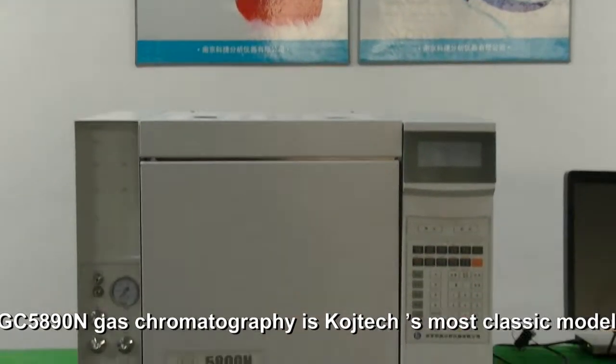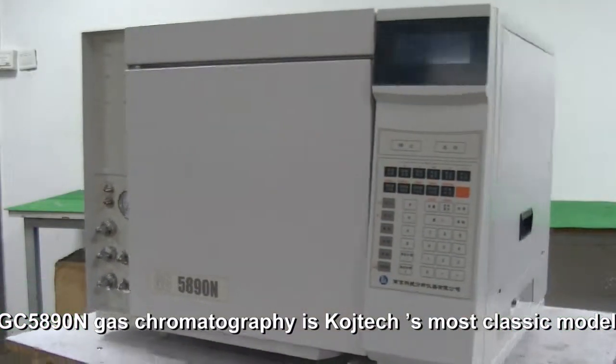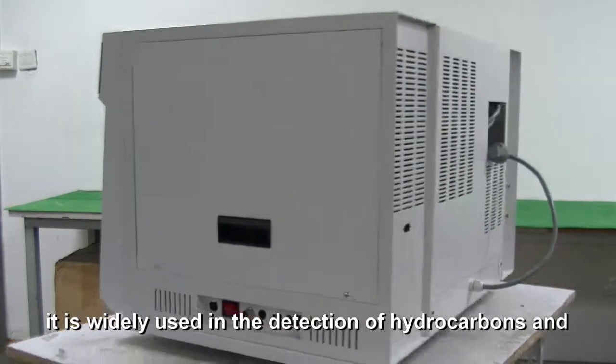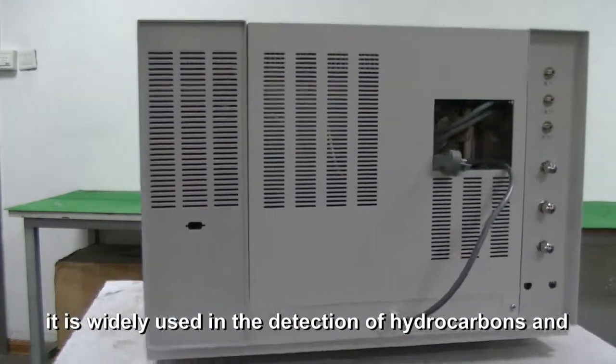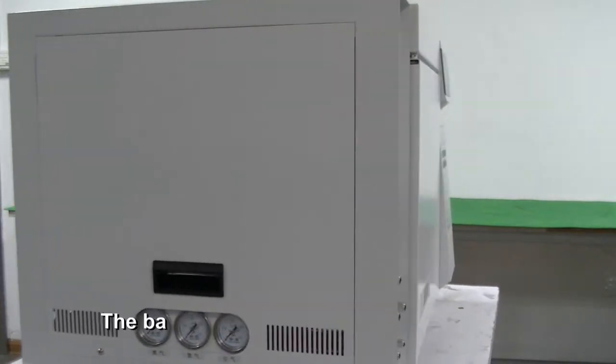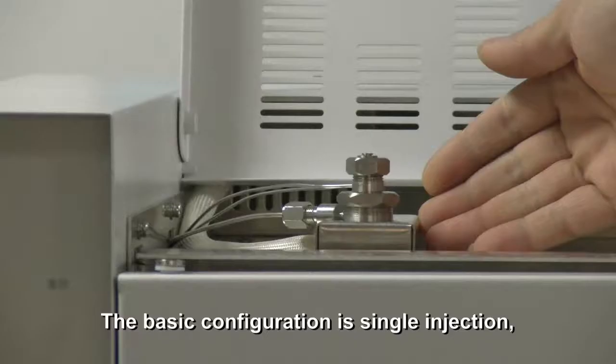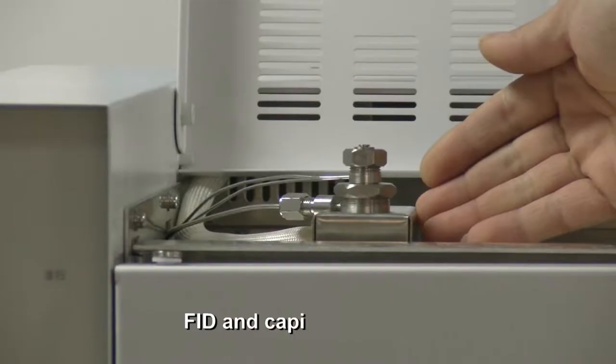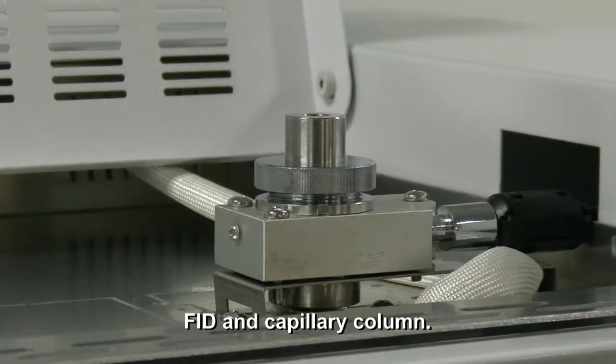GC5890N gas chromatography is Cordiotec's most classic model. It is widely used in the detection of hydrocarbons and some carbon-contained compounds. The basic configuration is single injection, FID, and capillary column.